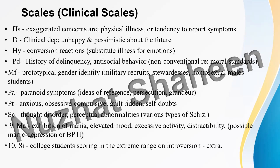The Paranoia (PA) scale was derived by contrasting normal persons with a group of clinical patients characterized by suspiciousness, over-sensitivity, and delusions of persecution without extensive egotism. The clinical patients standardized for this scale mostly fell under the categories of paranoid state and paranoid schizophrenia.